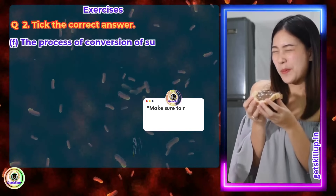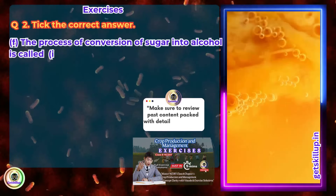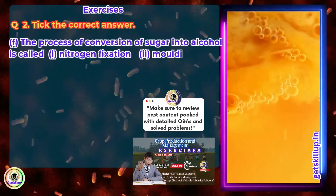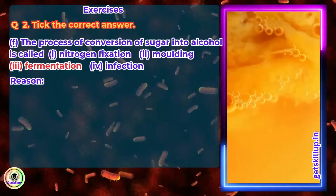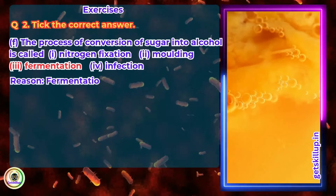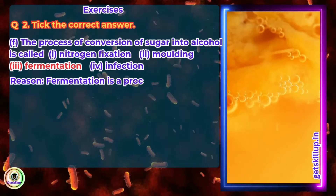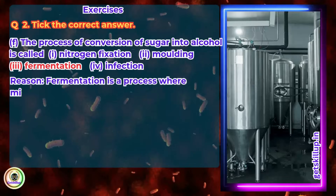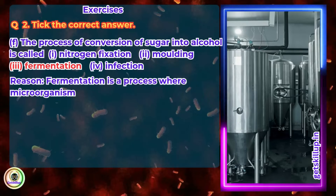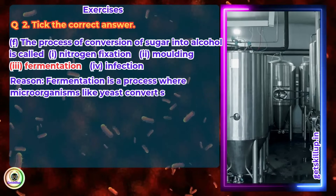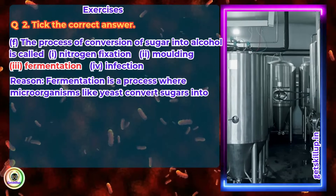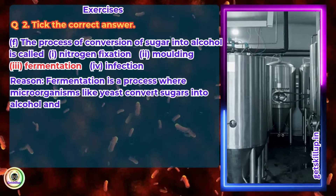The process of conversion of sugar into alcohol is called? Answer: Fermentation. Reason: Fermentation is a process where microorganisms like yeast convert sugars into alcohol and carbon dioxide.